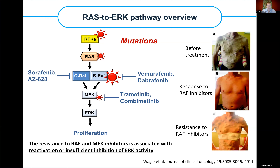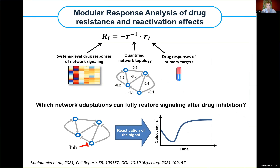RAS is the worst oncogene. It signals through the ERK pathway — can we inhibit it? To understand this, we must understand what leads to reactivation of the ERK pathway. We started from network analysis using the theory developed by Boris Kolodenko called modular response analysis. The main equation of this theory connects system-level responses to drugs — how each node of the signaling network responds — requiring knowledge of network topology and how primary drug targets respond to drugs.